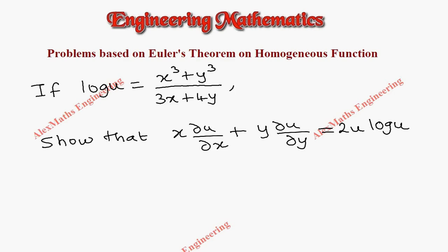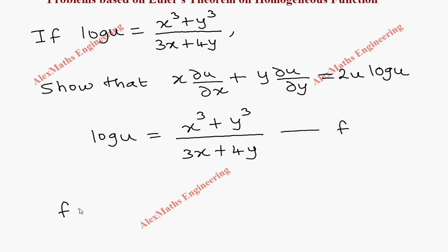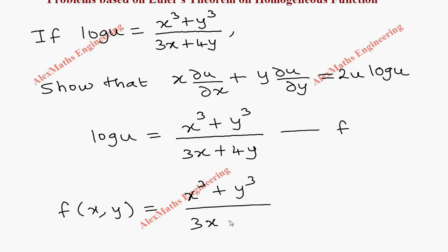Hi students, this is Alex. In this video we are going to discuss a problem based on Euler's theorem on homogeneous functions. There is a function given: log u equals (x³ + y³) divided by (3x + 4y). Let's name this function as f of x, y, which is (x³ + y³) divided by (3x + 4y). It is in terms of x and y, so we are taking it as f(x, y).